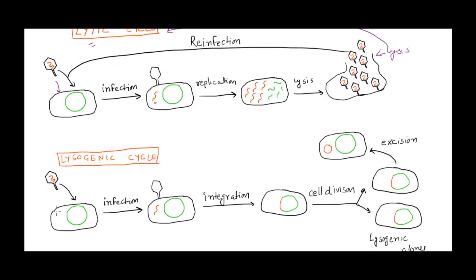Now let's see what happens in the lysogenic cycle. The phage infects the bacteria and releases its DNA. Instead of taking over the host machinery, in the lysogenic cycle, the viral genome gets integrated into the host genome — it becomes part of the host genome. It remains silently as part of the host genome, and every time the bacteria divides, this viral DNA also gets replicated.